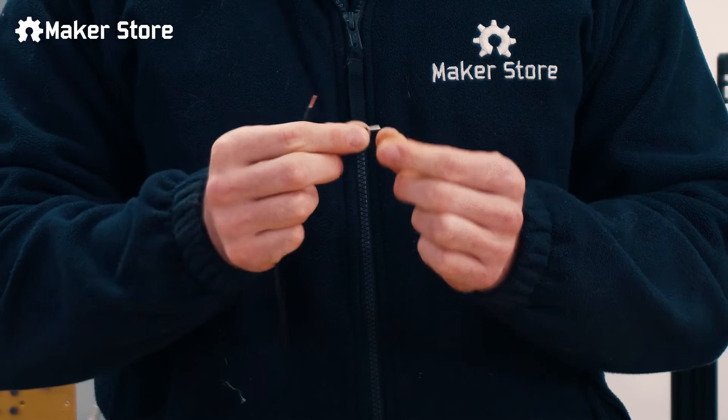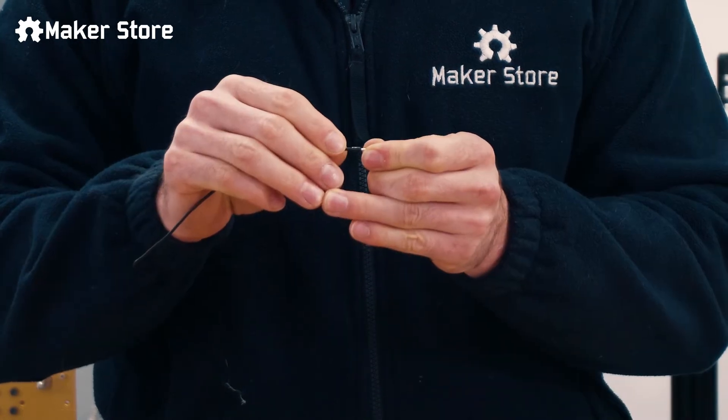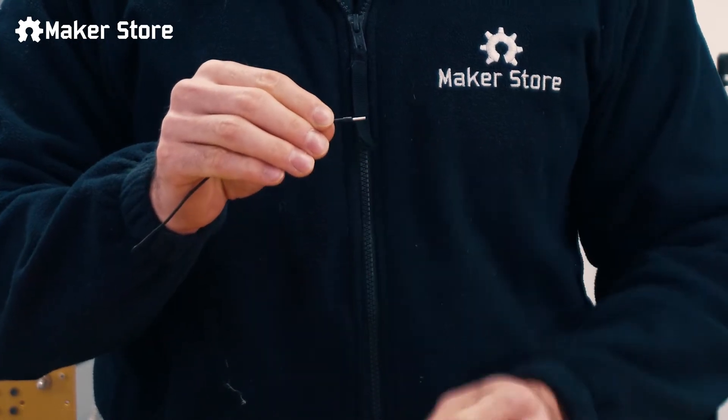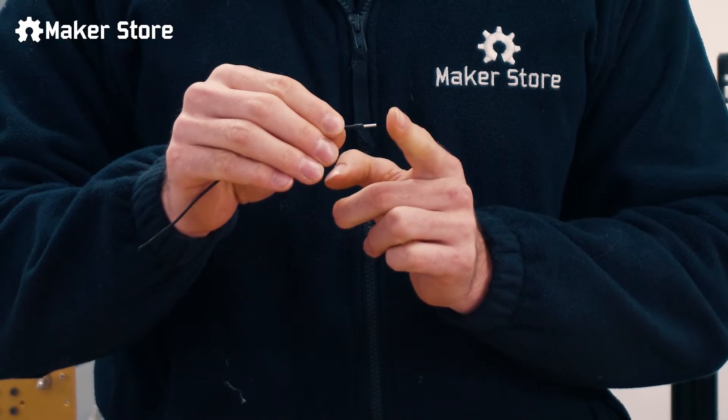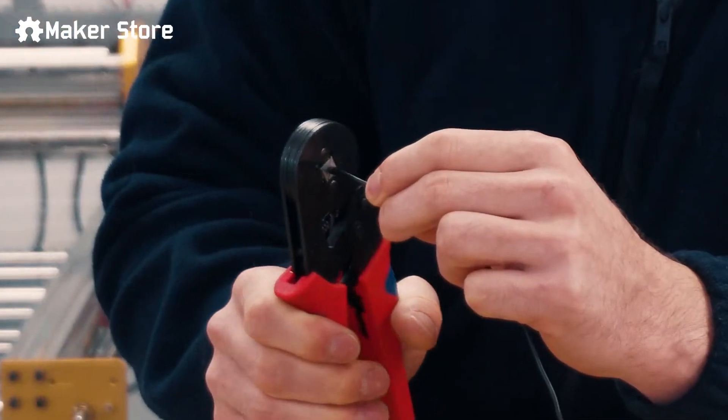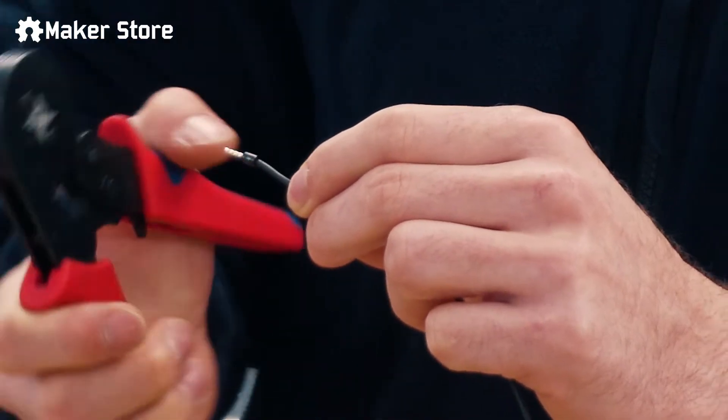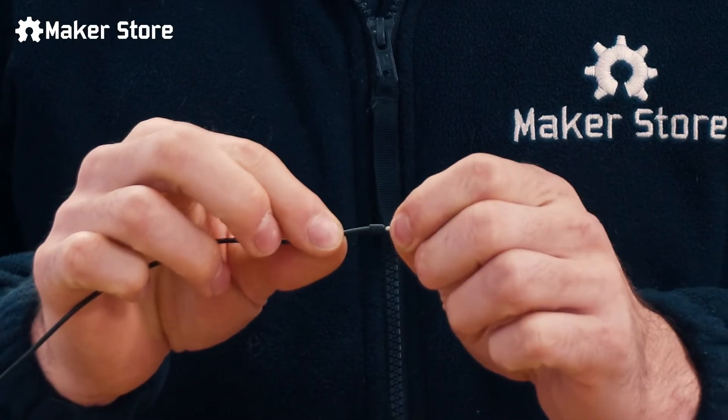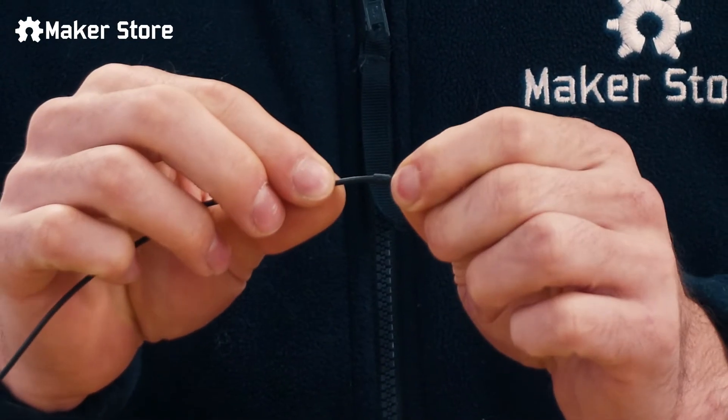Select an appropriate ferrule, apply the ferrule to the end of the wire, covering the exposed end completely. We will now take our crimping tool and crimp the metal part of the ferrule. Tug lightly on the ferrule to make sure you have achieved a strong crimp.